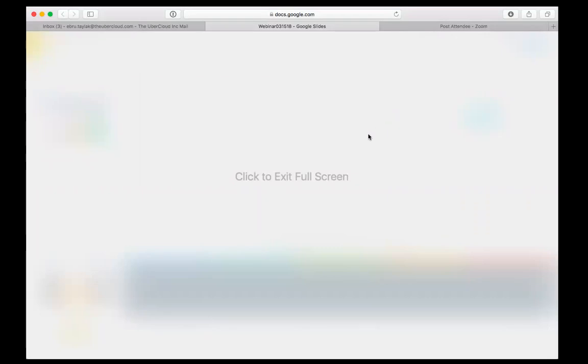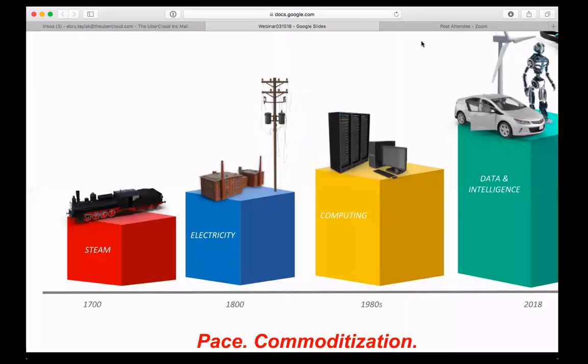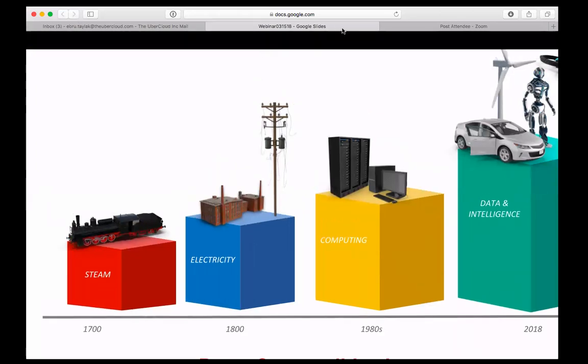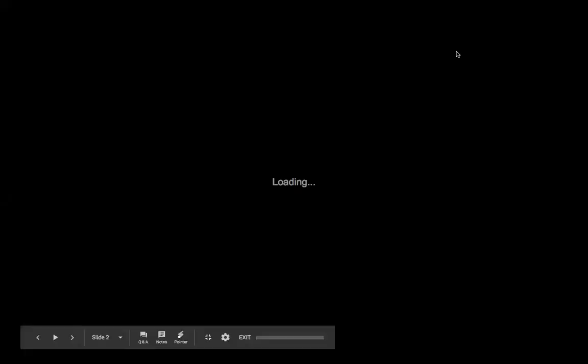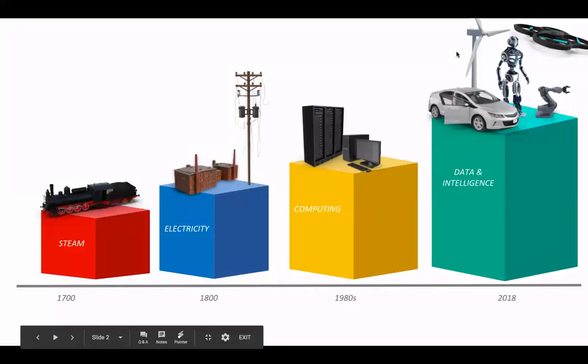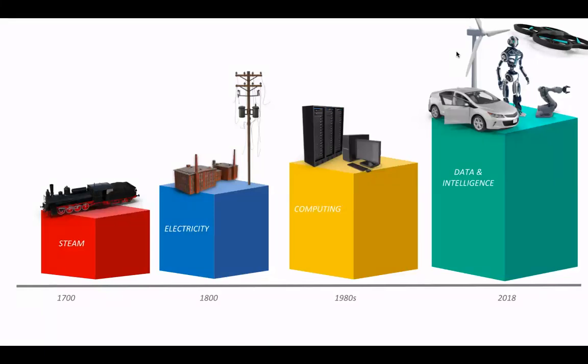When each revolution happens, it doesn't make sense to focus on the technologies of the previous revolution — you just consume them as a utility. The lesson for us is: if you want to take advantage of the technologies of the current revolution, you have to stop wasting time managing computing resources and consume them as a utility. That's the only way to take advantage of the higher-level functions of the data and intelligence revolution.